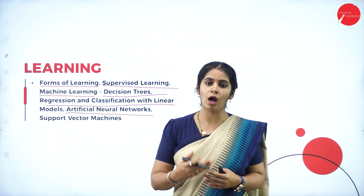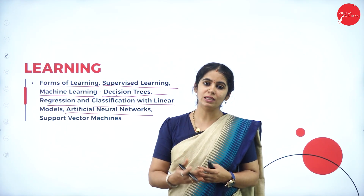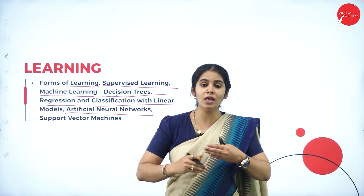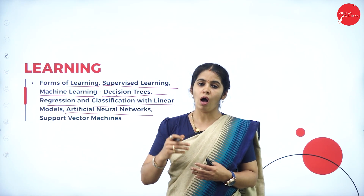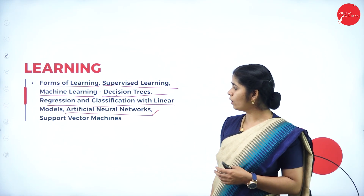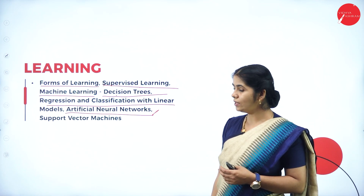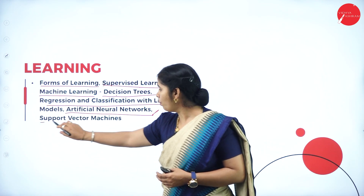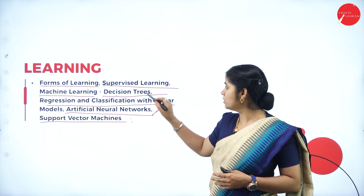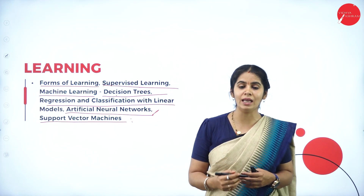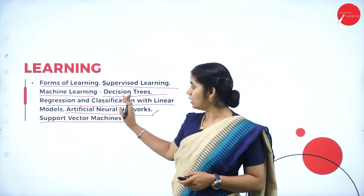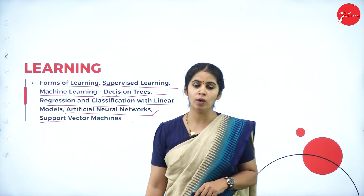We also discuss artificial neural networks, which work exactly like a human brain — the way neurons are connected in a human brain, we try to connect the knowledge of the machine using a neural network. Additionally, support vector machines are covered as supervised learning techniques. This is all discussed in unit 4.